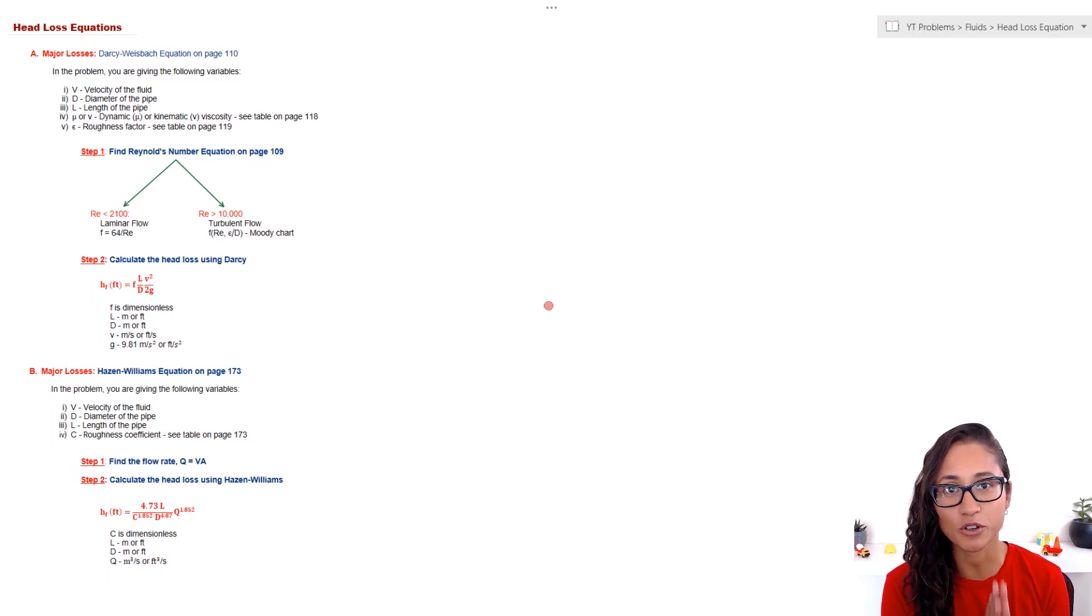There are two types of headlosses. We have major and minor losses. Major losses are usually due to friction. Minor losses are due to fittings, sudden pipe contraction, and expansions.